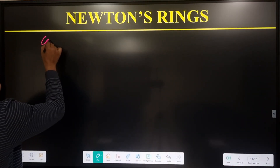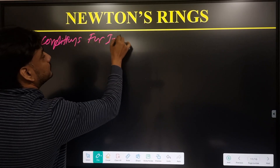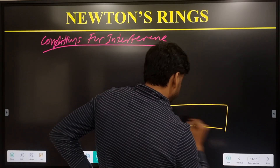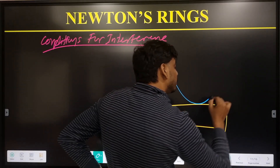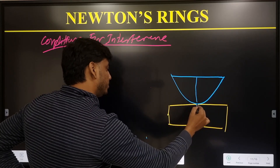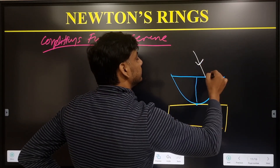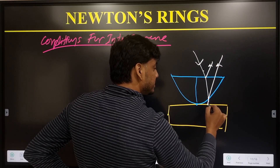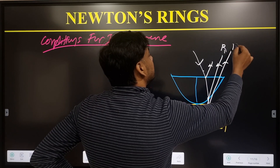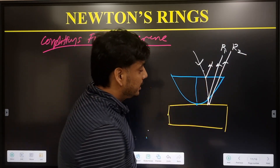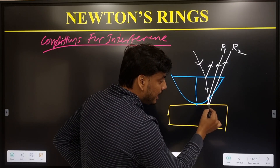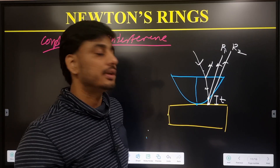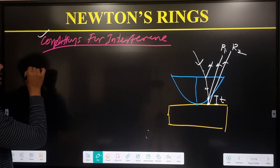For the conditions for interference, let us consider a glass plate over which a plano-convex lens is present. When a ray of light falls on the surface, a part of light reflects at the upper surface of the air film and a part reflects at the lower surface. Refraction also takes place. We are calculating the interference between these two reflected rays - the first from the upper surface of the thin film and the second from the lower surface. If the thickness of the thin film is t, we need to calculate the thickness and the radius.